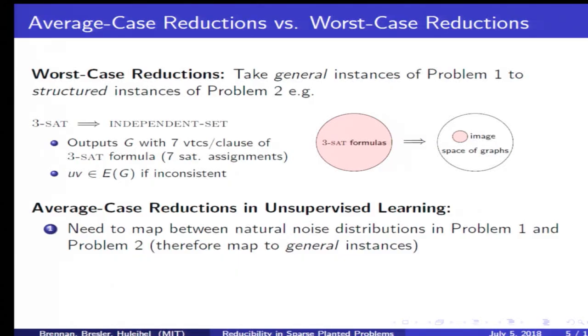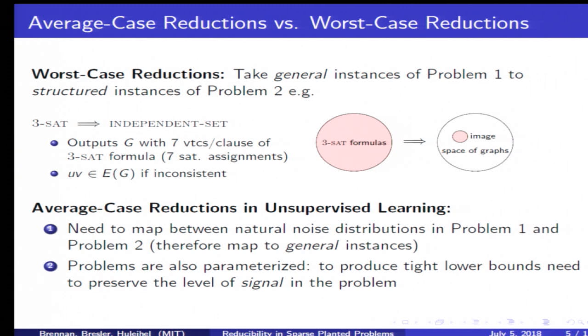For average case reductions, the situation is very different. Not only do we have to take general instances to general instances, we also need to map very precisely a noise distribution for the first problem to a specific noise distribution for the second. There's also this very subtle issue of parameterization. The problems here are parameterized, whereas in the simple instance I gave in worst case reductions, it is not. When you have some parameter corresponding to the SNR, in order to show tight lower bounds for a second problem, you would need to map the SNR in such a way that you preserve the computational boundary.